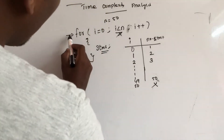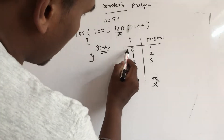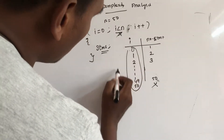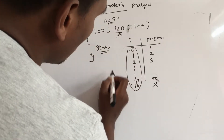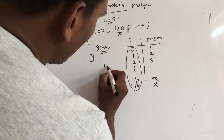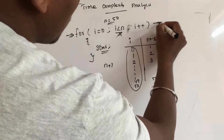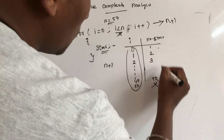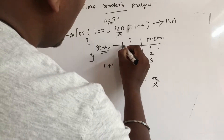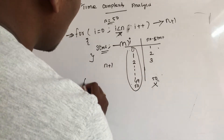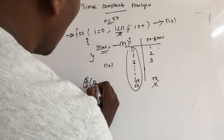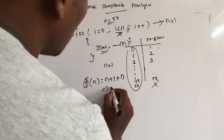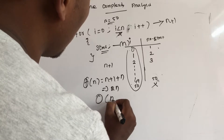So if we look at this loop, it will execute from 0 to 50. If we look at n value 50, you can count n plus 1. So this line height will be n times executed. If we look at f of n, it is equal to n plus 1 plus n, giving 2n — order of n.